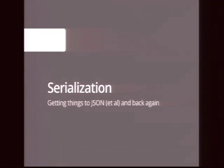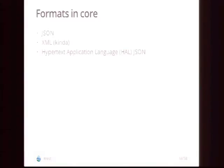Back to Lynn for serialization. Klaus was showing all this JSON and XML — I want to show how you actually get your data into those formats. We have three formats in core: JSON; XML — which is basically just JSON with angle brackets, no namespacing or attributes, so if you want real XML I'd suggest not using this one; and the Hypertext Application Language, which is our hypermedia format that supports linking in JSON but also has an XML variant.